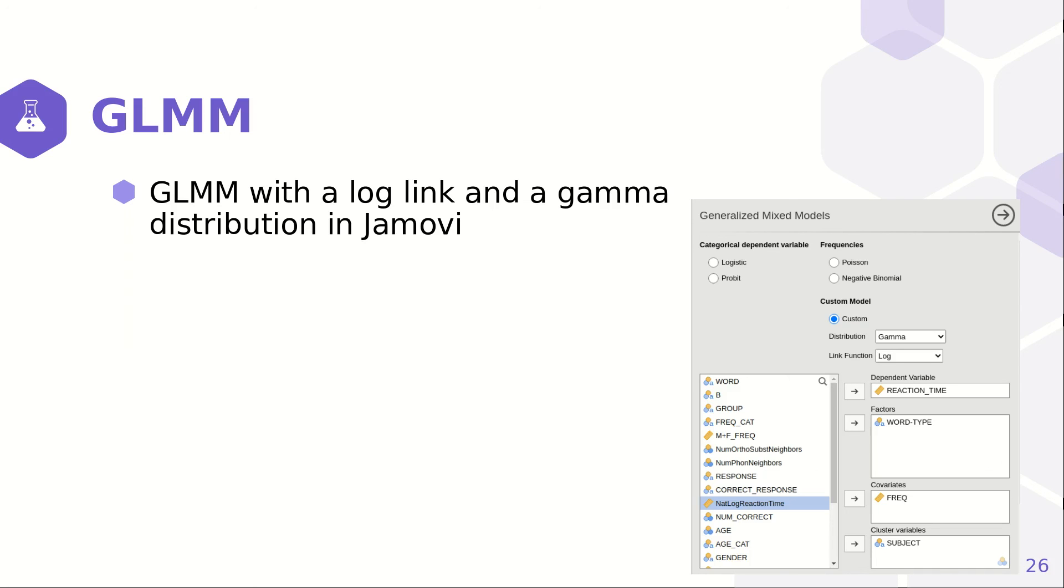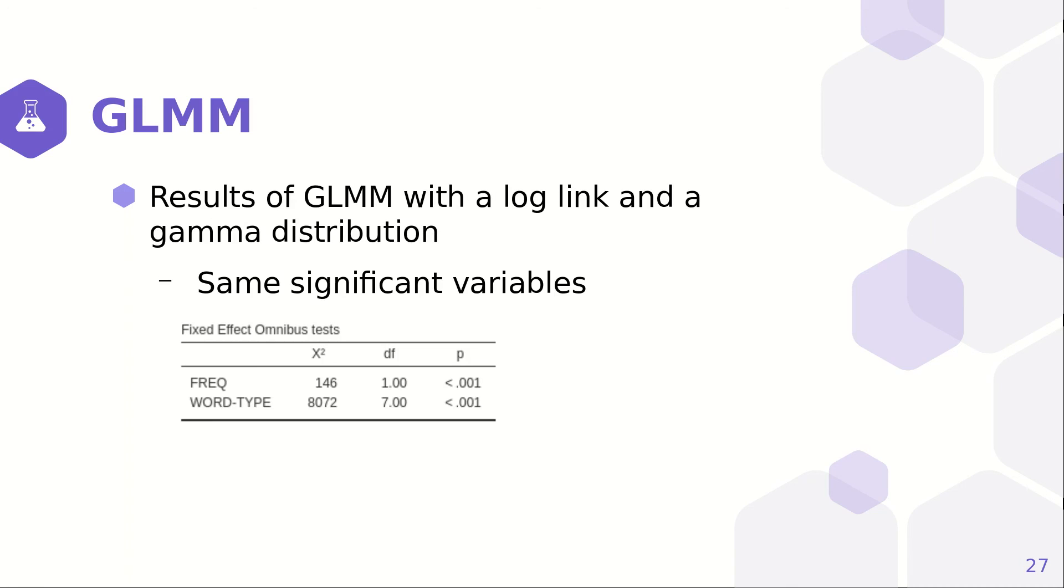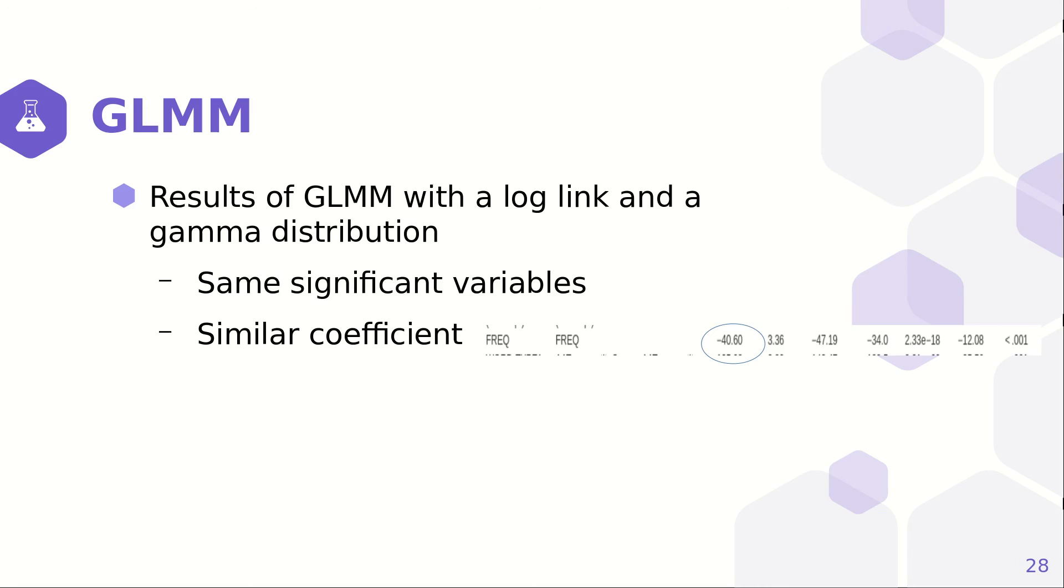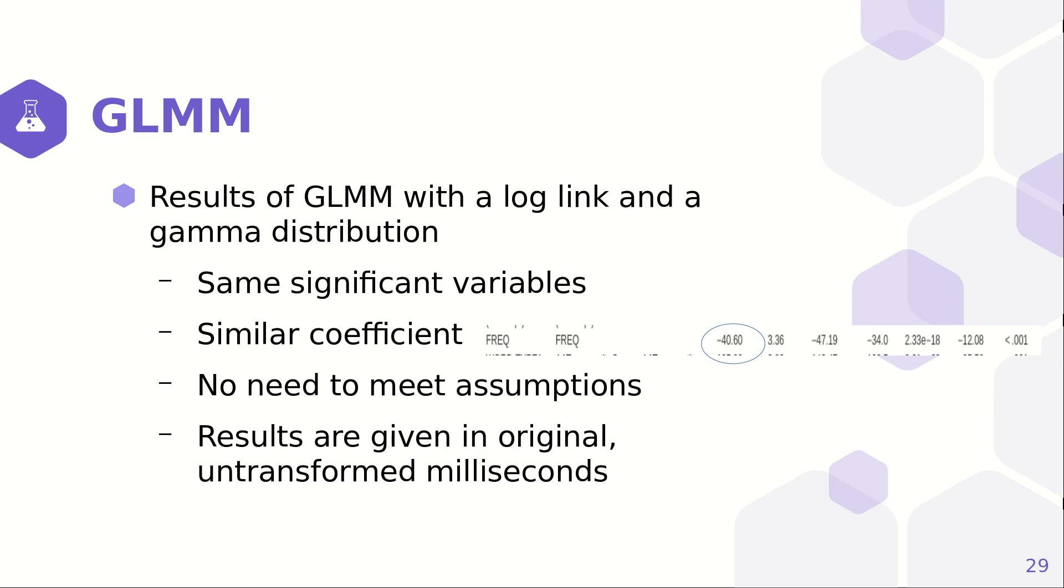Here's how you would run that analysis in Jmobi. So, the results of a GLMM with a log link and a gamma distribution results in the same significant variables and a similar coefficient. So, for every one unit increase in frequency, reaction time goes down by about 40 milliseconds. The coefficient is very similar. The nice thing is we don't need to meet the assumptions, and the results are given in original, untransformed milliseconds.